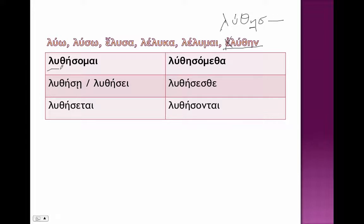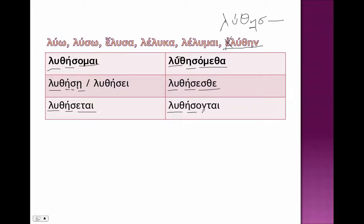So: luth-ace-omai, luth-a-sigma-a, luth-ace-etai. There should be no accent there. Luth-ace-omatha, luth-ace-esthe, and luth-ace-ontai.